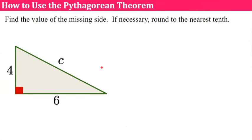Now let's use the Pythagorean theorem to find a missing side of a right triangle. Remember it must be a right triangle. That's the only kind of triangle the Pythagorean theorem works on. We're also being told that if necessary round to the nearest tenth. So my students will be very happy to know that they can use their calculators.